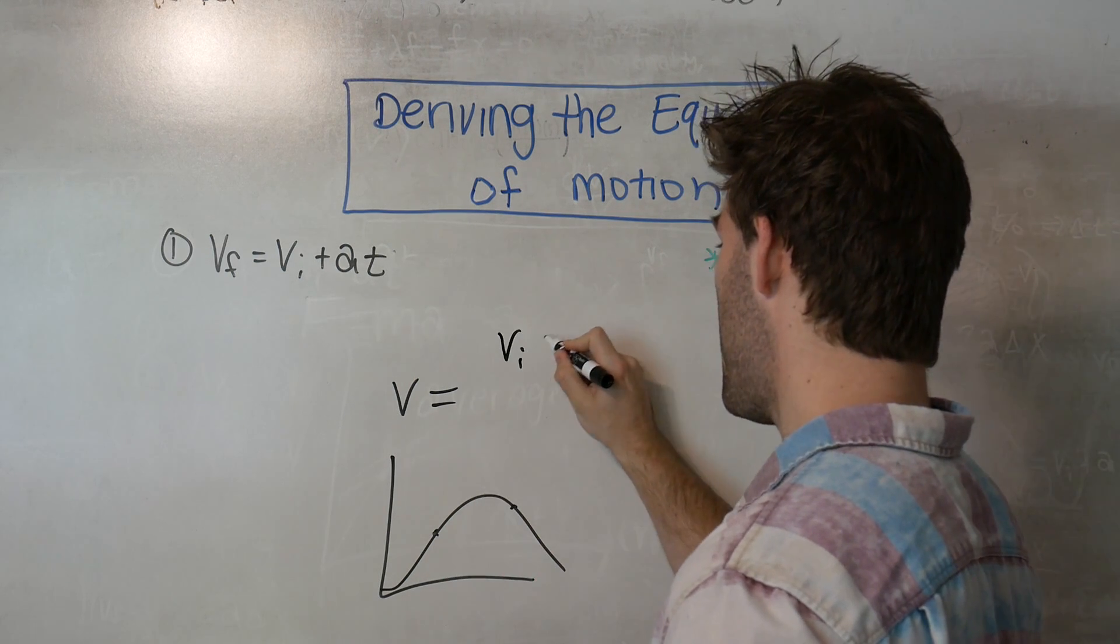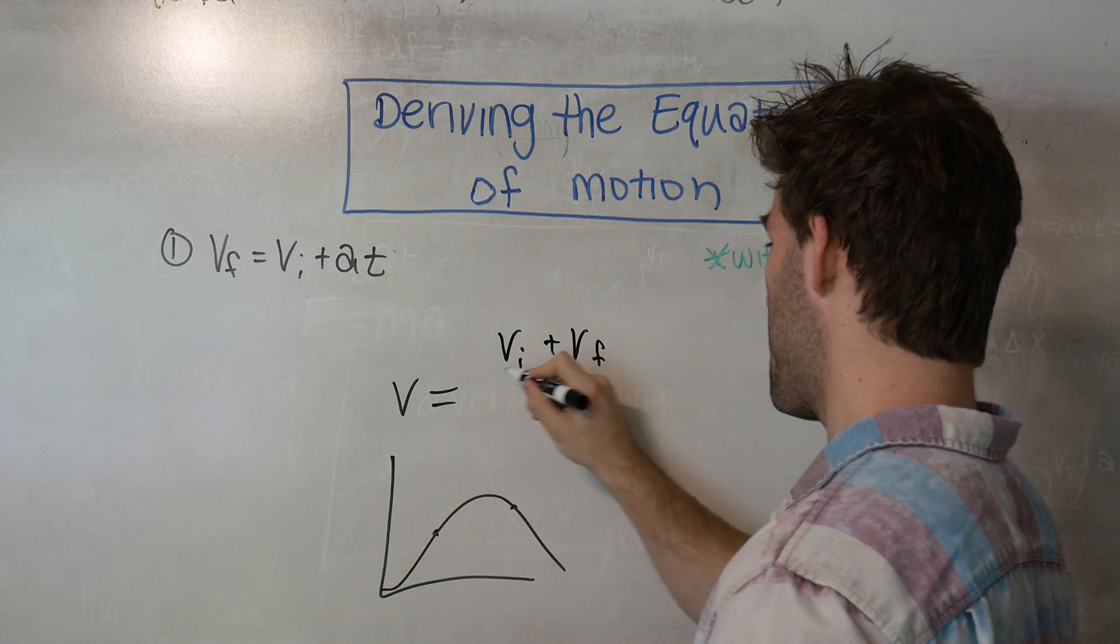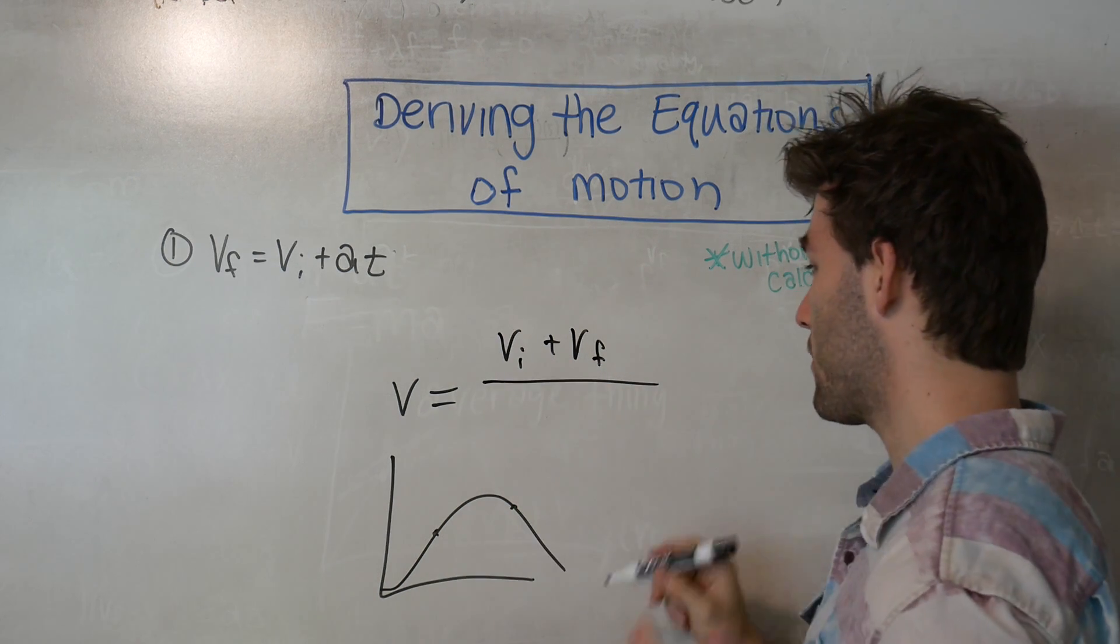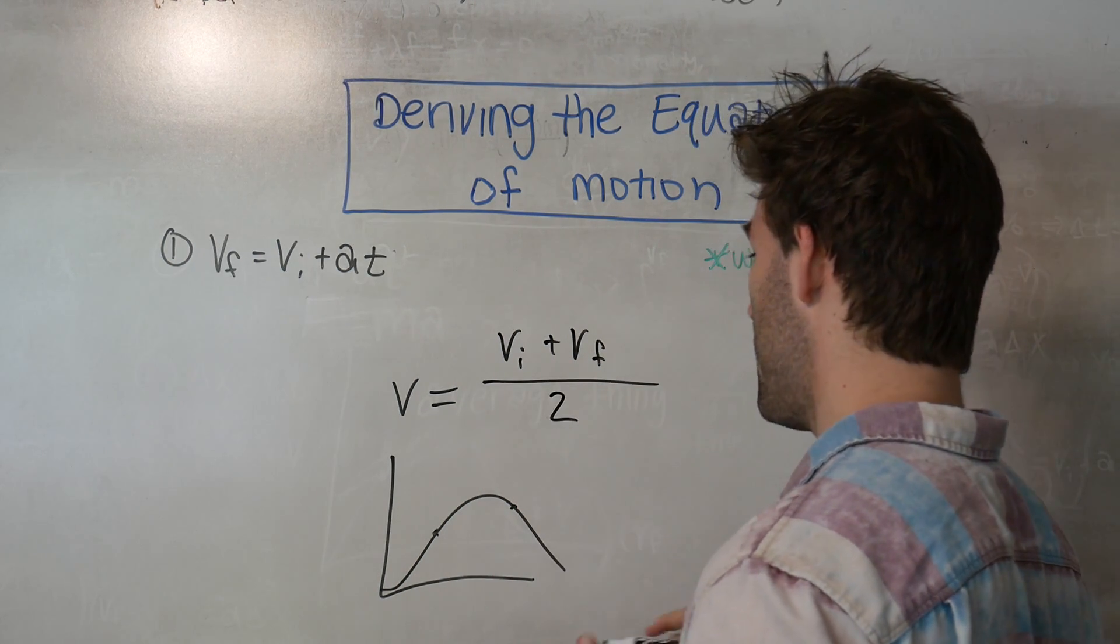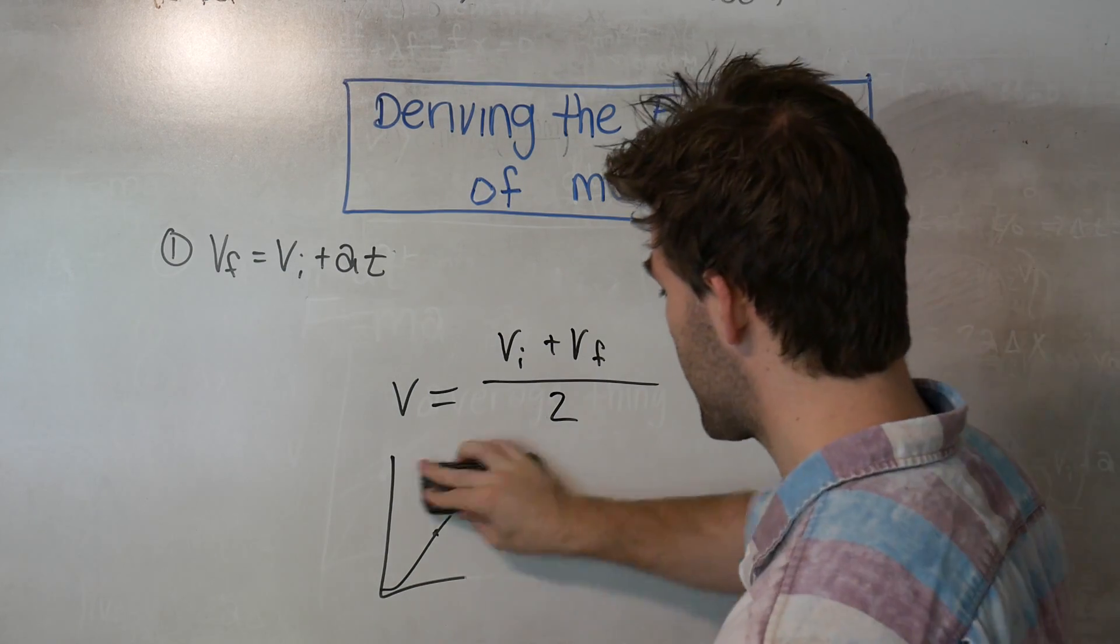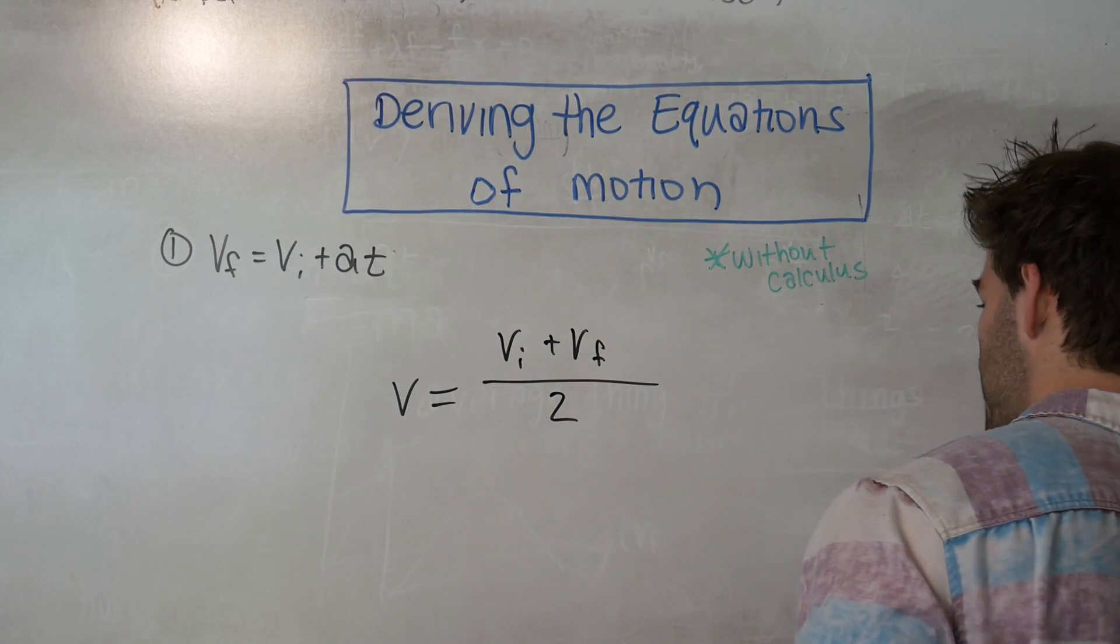So the two things that we're going to be talking about are V initial, V final. So it's going to be VI plus VF. There's two quantities that we're talking about, so the number of things is just two.